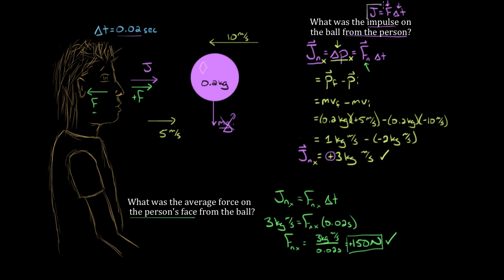To recap: the impulse from an individual force is defined as that force multiplied by the time interval during which it is applied. The net force in a given direction multiplied by the time interval gives the net impulse in that direction, which also equals the change in momentum in that direction. A convenient way to remember this is the mnemonic JAPFAT: net impulse equals change in momentum equals net force times time interval. And remember that during collisions, there's always an equal and opposite force exerted on the two objects participating in the collision.